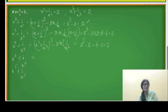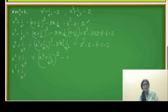Next, x to the power 6 plus 1 over x to the power 6. This can be written as (x³ + 1/x³)² minus 2 times x cubed times 1 over x cubed. Since x cubed plus 1 over x cubed is 2, this gives 2 squared minus 2, which is again 4 minus 2 equals 2.